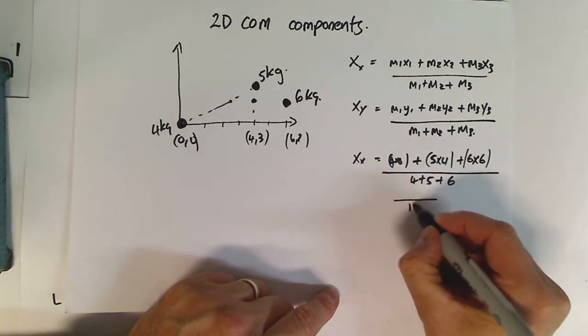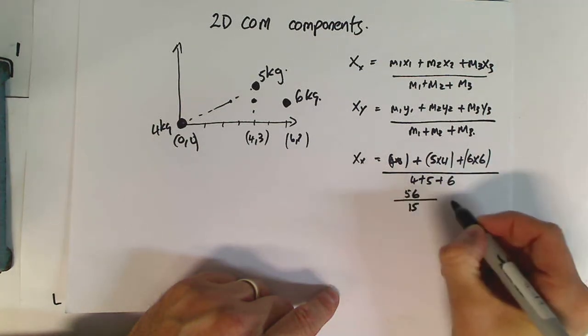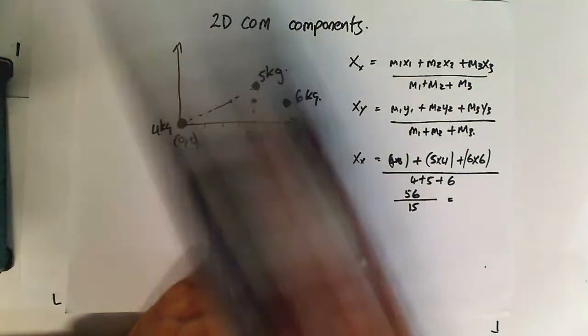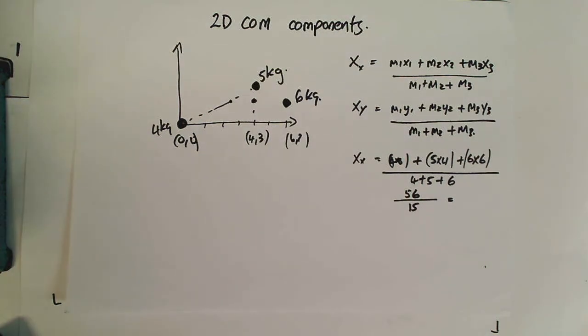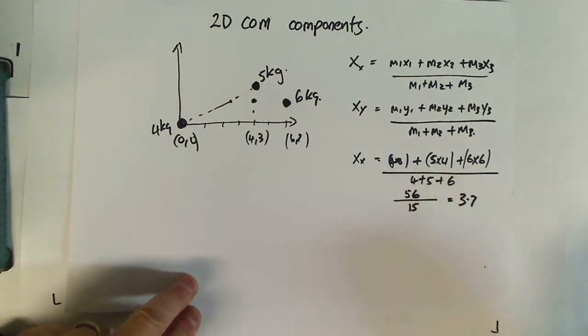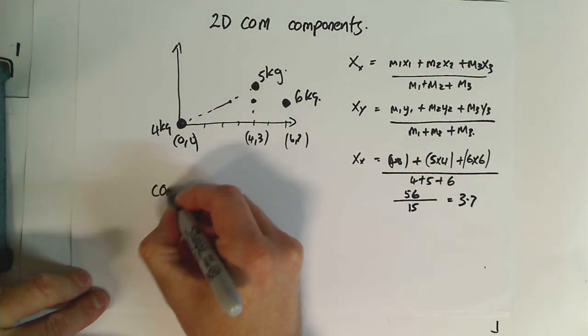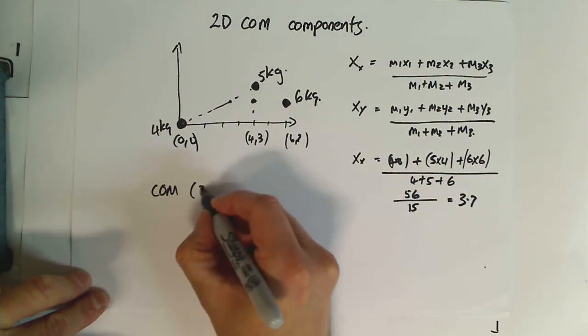So, we end up with 20 and 36, 56 over 15, which, if we get our little calculator, we can work out 56 divided by 15, and we've got 3.7 after rounding. Now, that's going to be our x component for our center of mass. This is going to equal 3.7.